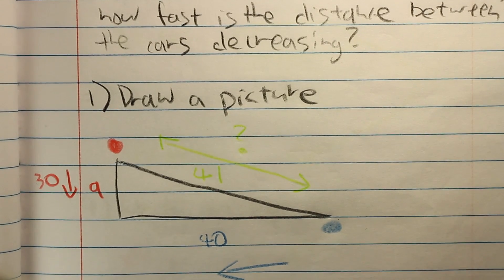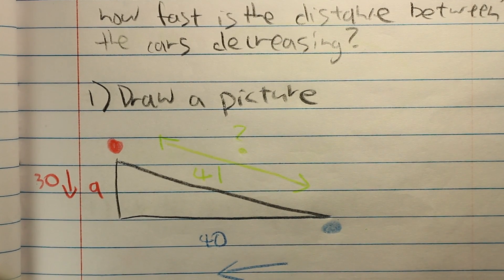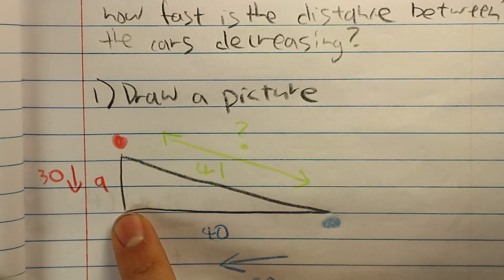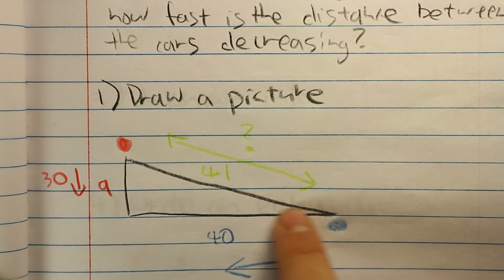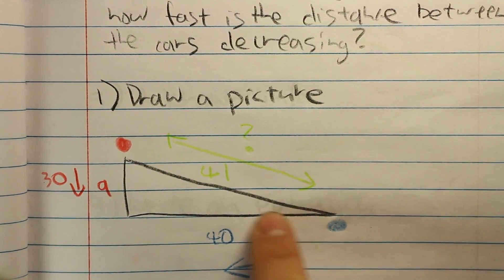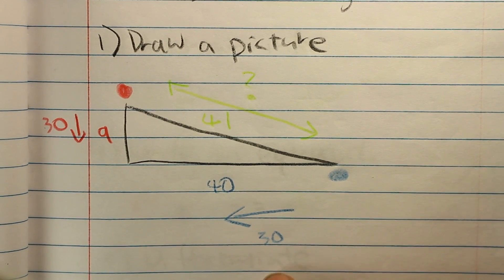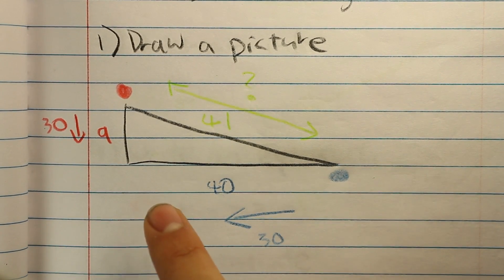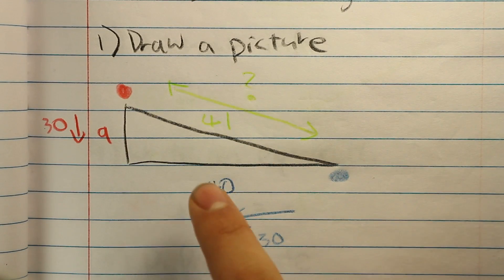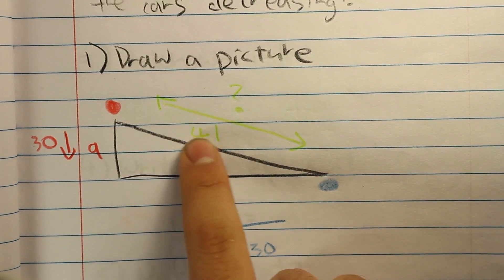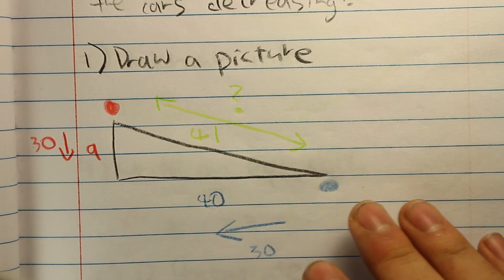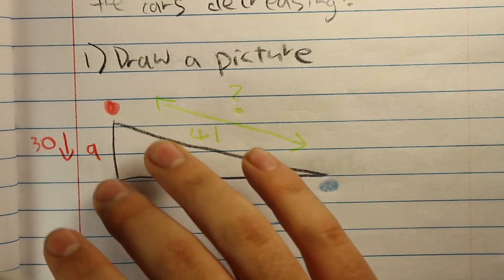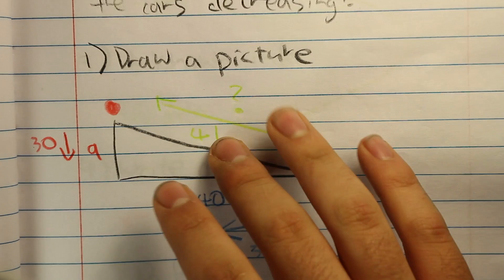As always, we need to draw a picture to see what the problem is asking. This is the intersection; this is car A, car B, and this is the distance between the two cars. They are both going towards the intersection at 30 miles per hour; however, car B is 40 miles away while car A is only nine miles away. By using the Pythagorean theorem, the distance between the two cars is 41 miles.